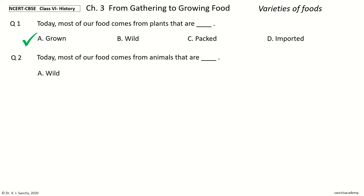Question 2: Today most of our food comes from animals that are dash. The options are: wild, trapped, reared, harnessed. And the answer is reared.